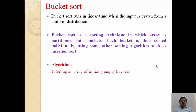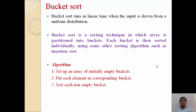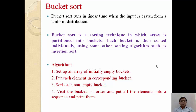The algorithm has four steps. Step one: set up an array of initially empty buckets. Step two: put each element into its corresponding bucket — we provide a range for every bucket and store different elements inside based on that range. Step three: sort each non-empty bucket into ascending order using insertion sort. Step four: visit the buckets in order, put all elements into a sequence, and print them to get the list in ascending order.